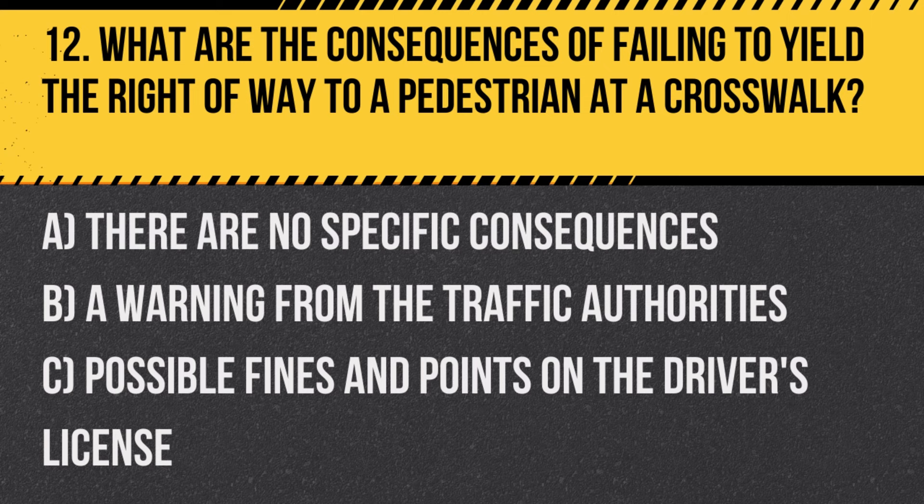Question 12: What are the consequences of failing to yield the right of way to a pedestrian at a crosswalk? A. There are no specific consequences. B. A warning from the traffic authorities. C. Possible fines and points on the driver's license. Answer: C. Possible fines and points on the driver's license. Failing to yield to pedestrians can lead to serious legal consequences, including fines and points.